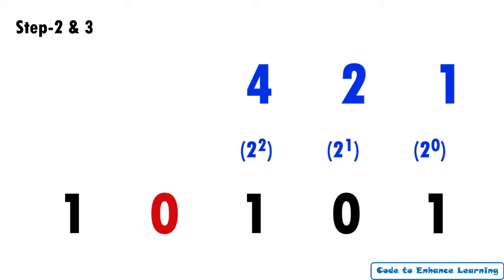Next bit is 0. We will assign 2 power 3 which is equal to 8 and write it above the binary bit 0. Last bit is 1. We will assign 2 power 4 equal to 16 and write it above the binary bit 1.